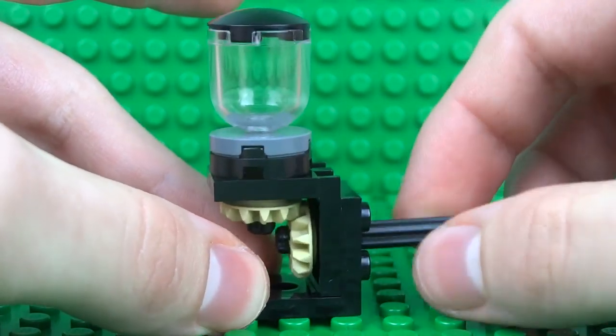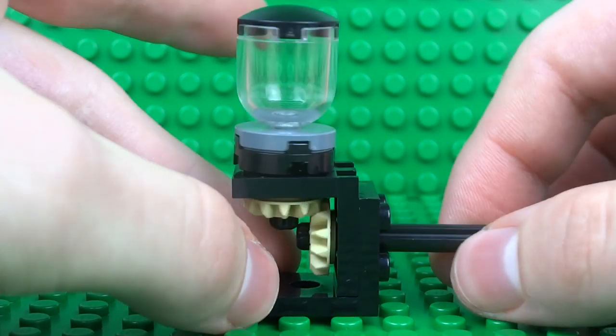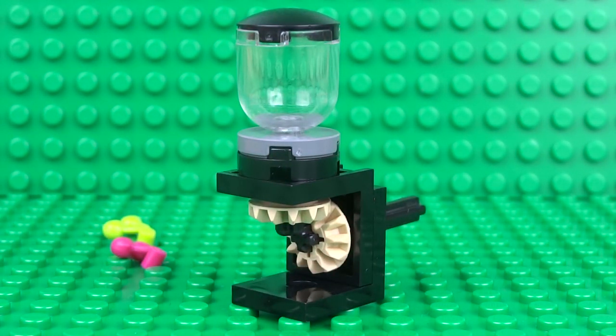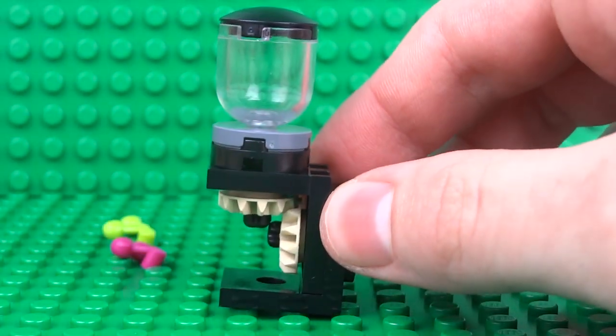And now you can see you can actually manually use your blender. Just spin it on the side. You can even add a small handle if you want to, or you can motorize it and I'll show you how you can achieve the best results using a power functions motor.